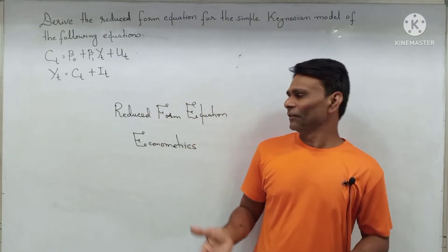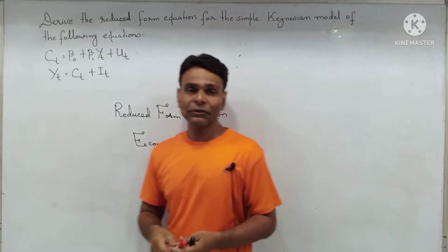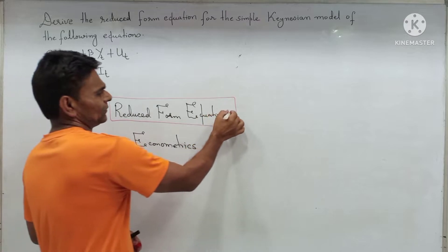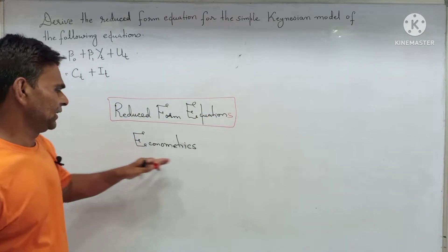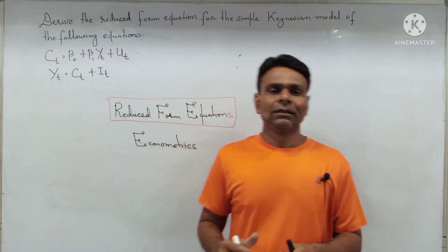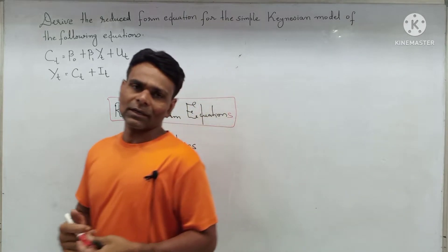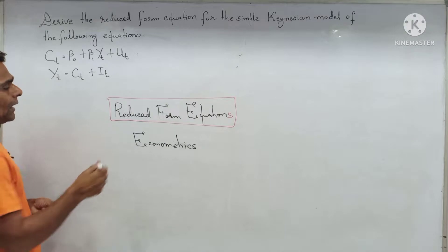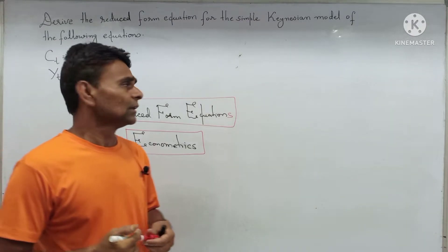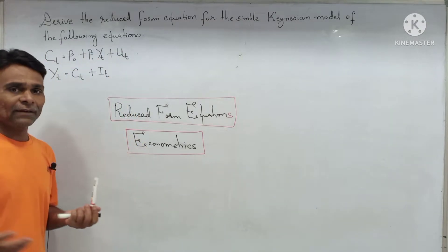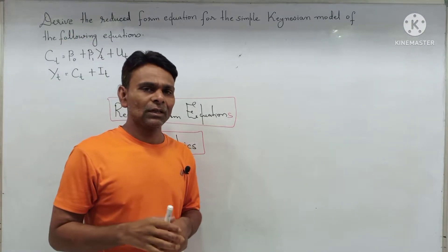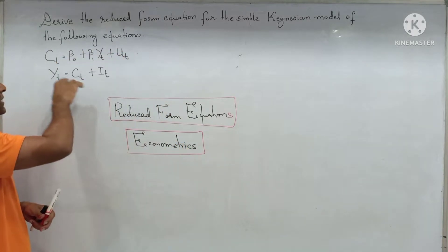Hi friend, in this video I will discuss reduced form equation. Reduced form equation is a very important and vital concept in econometrics for better understanding of the indirect least squares method, order condition, etc. What is the reduced form equation, how to derive it, and through this video I am presenting the reduced form equation from the simple Keynesian model having two equations: consumption function and income function.